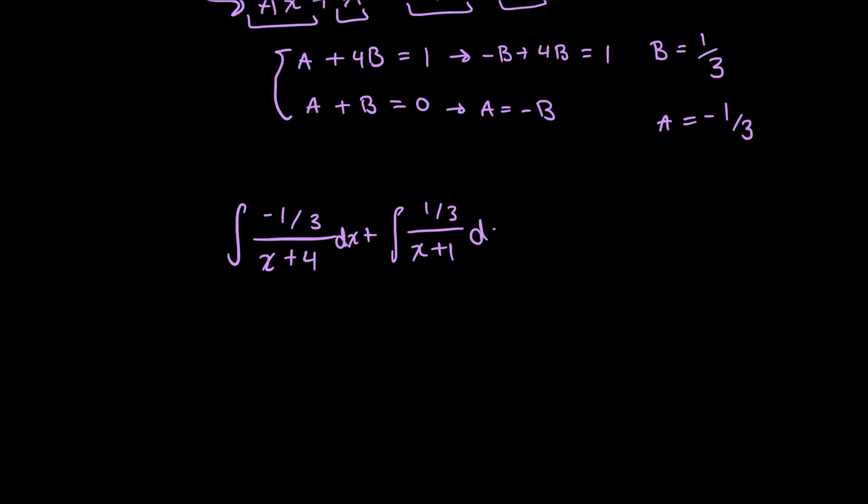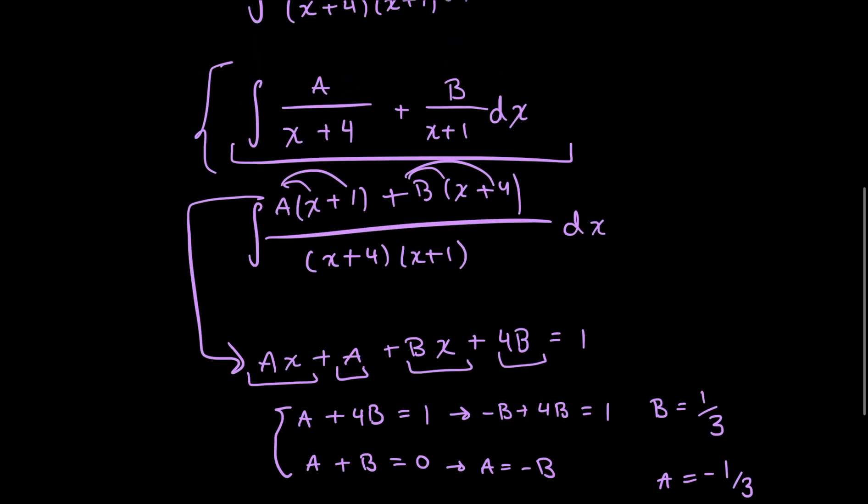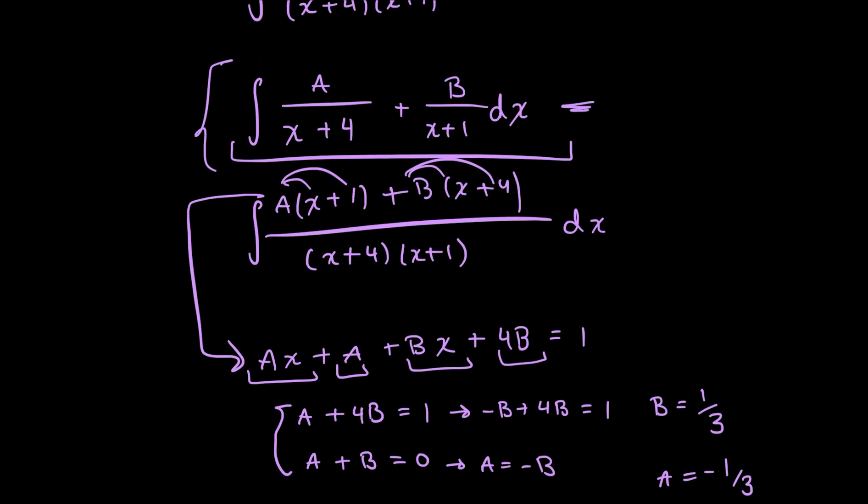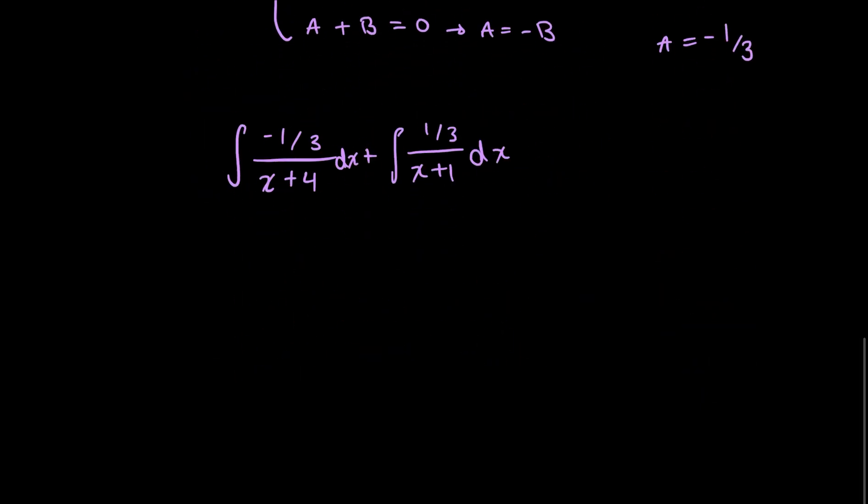Right, because I just plugged in the constants into this decomposed fraction form. So now to start integrating these two, you could pull out these constants. So you'd have negative 1 over 3 over 1 x plus 4 over, 1 over x plus 4 dx.